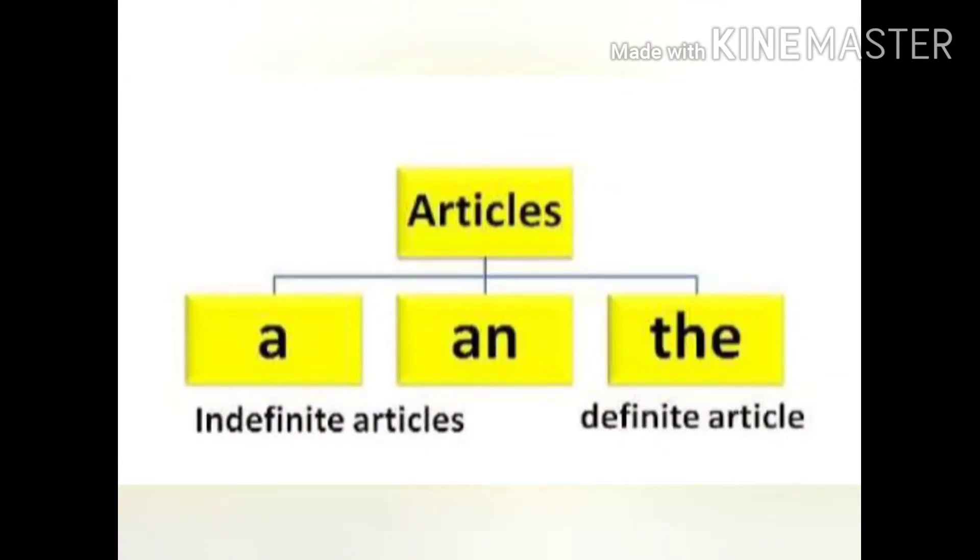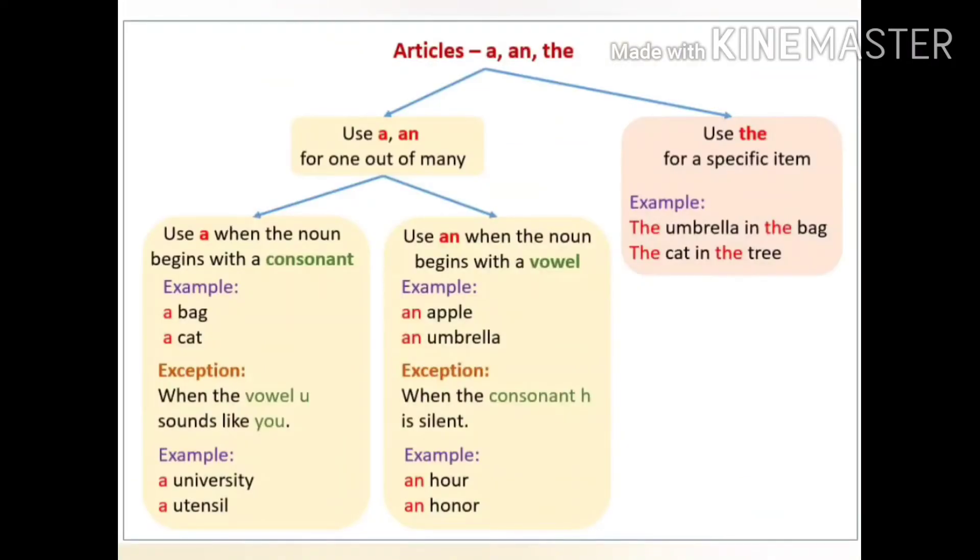Indefinite articles can be further classified as a and an. For basic terms, we know that a is used with consonant sound and an is used with a vowel sound.